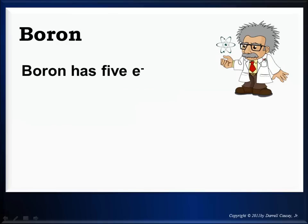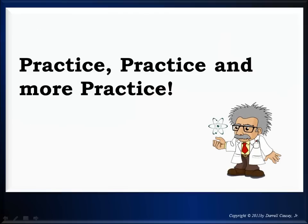Alright. Now boron. Now the p has 1 electron. And there's boron. And we keep distributing them as we go through the electrons. The number 1 thing here is practice, practice, practice. And be on the lookout for a video on just doing electron configuration orbital notation using the information from the quantum number lesson.